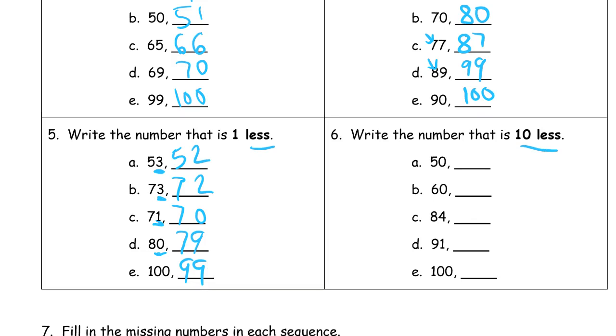And now, counting backwards by tens, what's 10 less than 50? 40. 10 less than 60 is 50. 10 less is easier, is a little bit easier than one less sometimes. 84, because you just have to look at that tens digit, and the ones digit won't always stay the same. So it's going to be 1 less than 90. 10 less than 91 is going to be 81. 10 less than 100 is going to be 90.